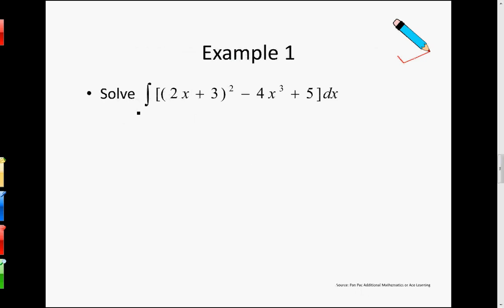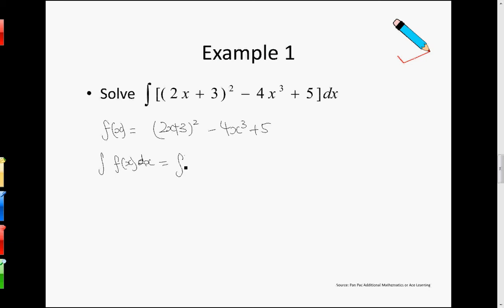So let me give you an example. I need to solve this thing over here. So my f(x) in this case is just (2x + 3) to the power of 2, minus 4x cubed, plus 5. If I want to integrate f(x) dx — I forgot to write a dx over here — I can do it in different parts. So I can choose to do the first part dx, plus — actually this should be a negative — so take note this is a negative one, I can actually bring it out, plus the integral of 5 dx.